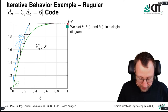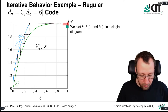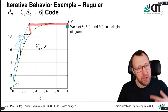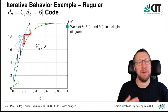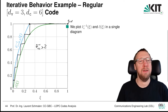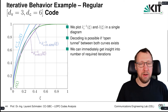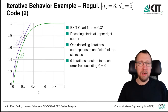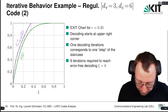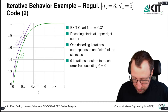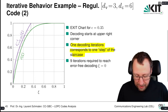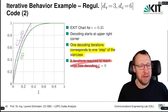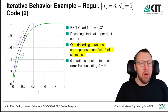Decoding starts at the upper right corner, and one decoding iteration corresponds to one step of the staircase. In this example, we require nine iterations to reach error-free decoding.